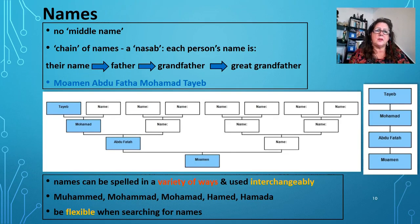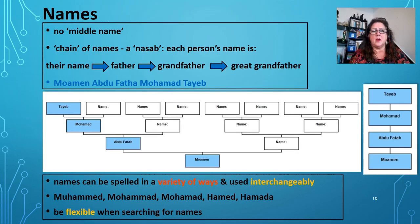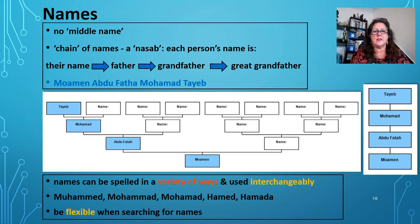It's interesting that in Egypt, people don't have what we might call a middle name. They utilise a chain of names — each person's name is their name, their father's name, their grandfather's name, their great grandfather's name. My friend has allowed me to use a small pedigree tree here. We can see how his name has been formed: Mohan, Abdu Fatah, Mohamed, Taib — his name, father's name, grandfather's name, great grandfather's name.